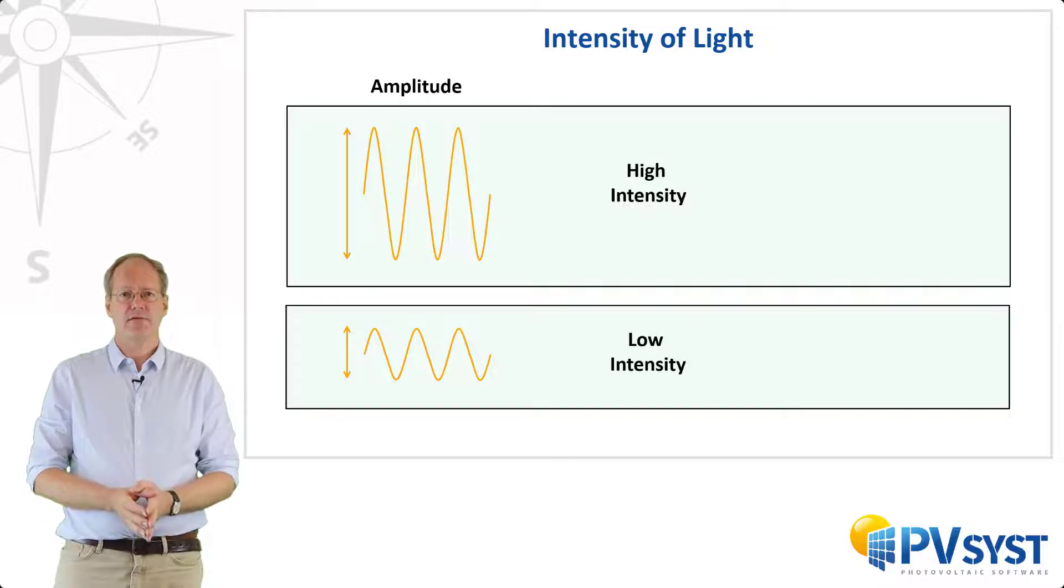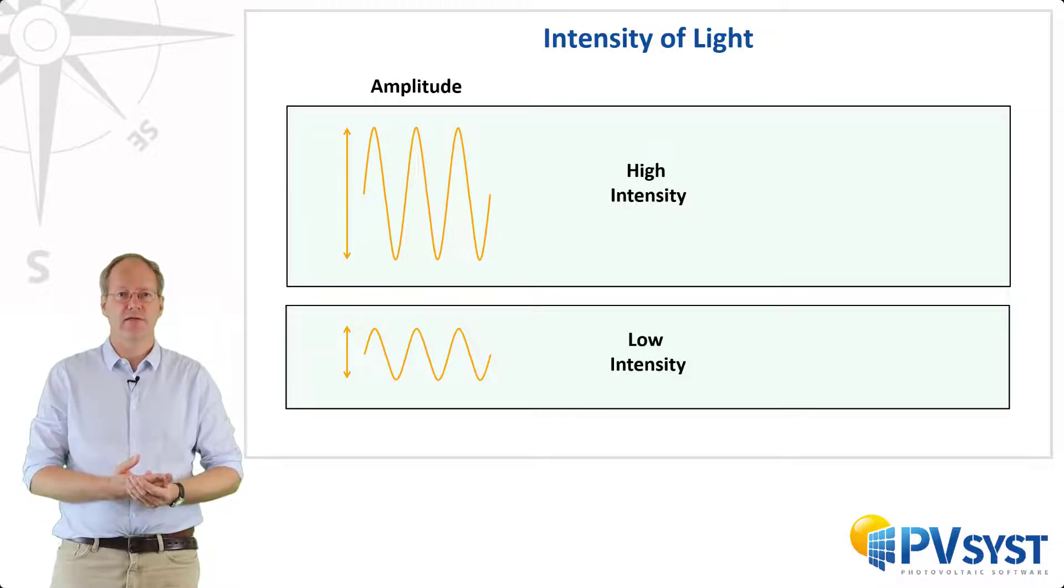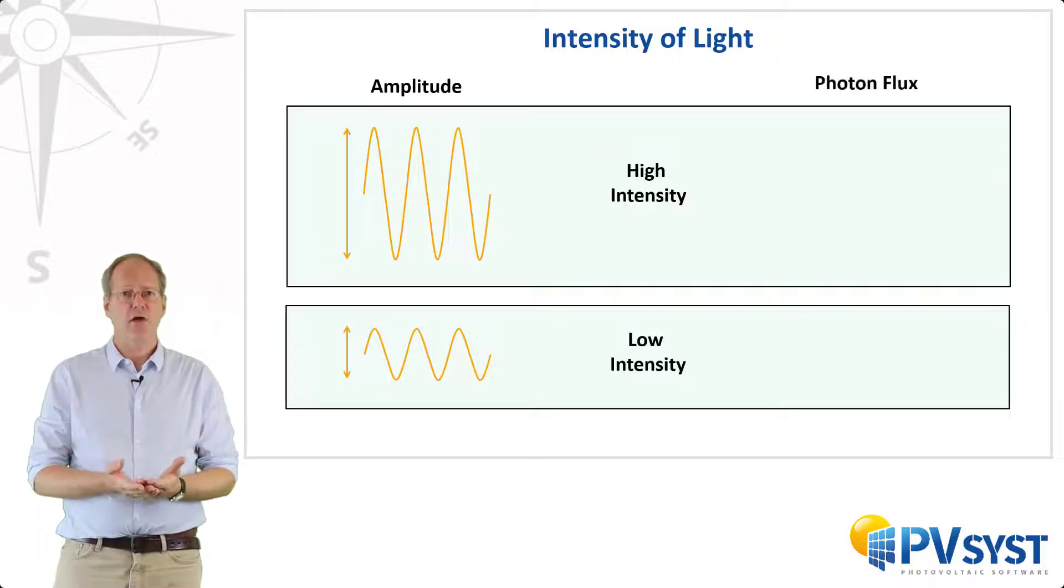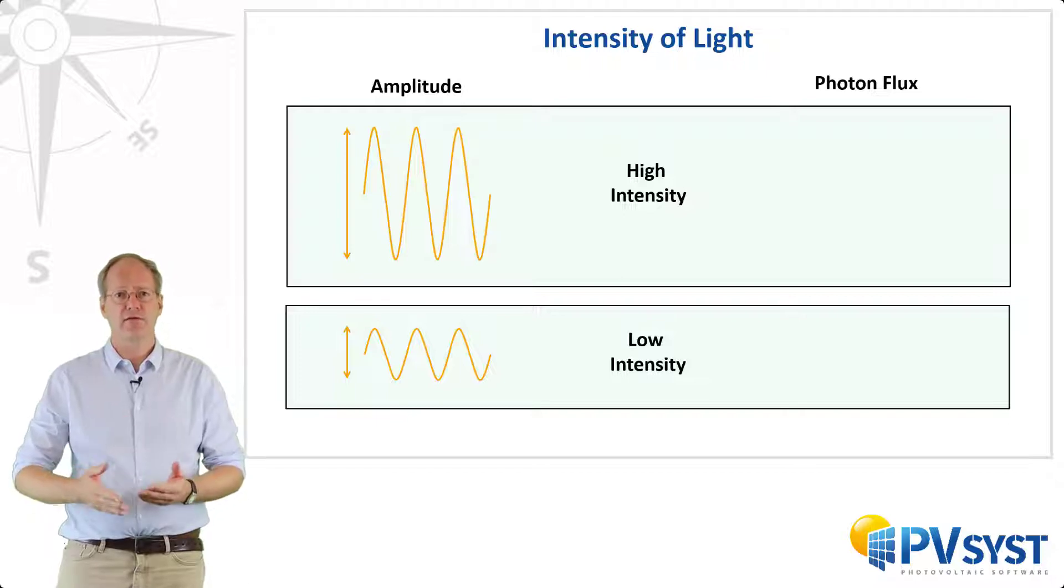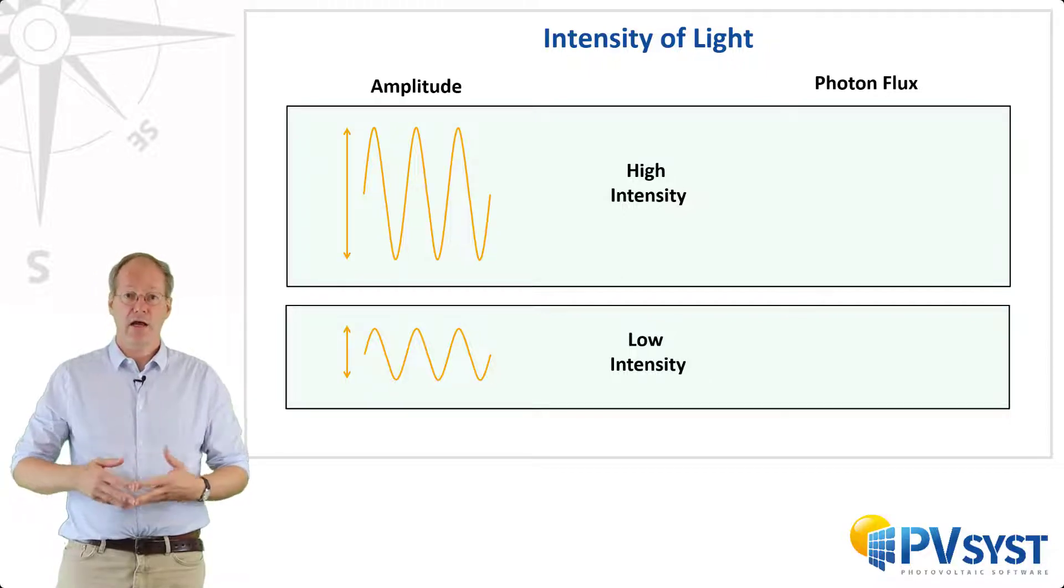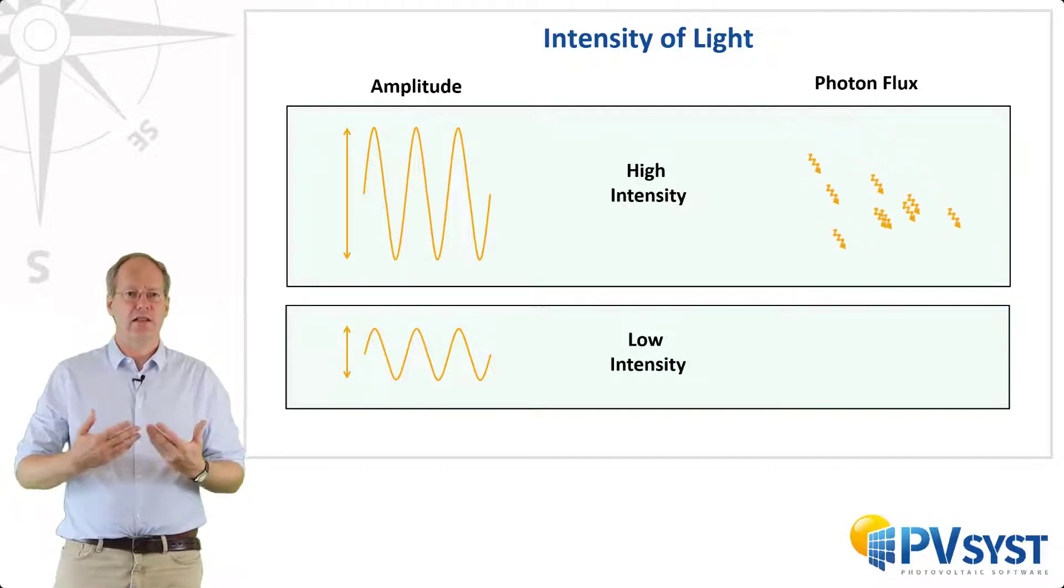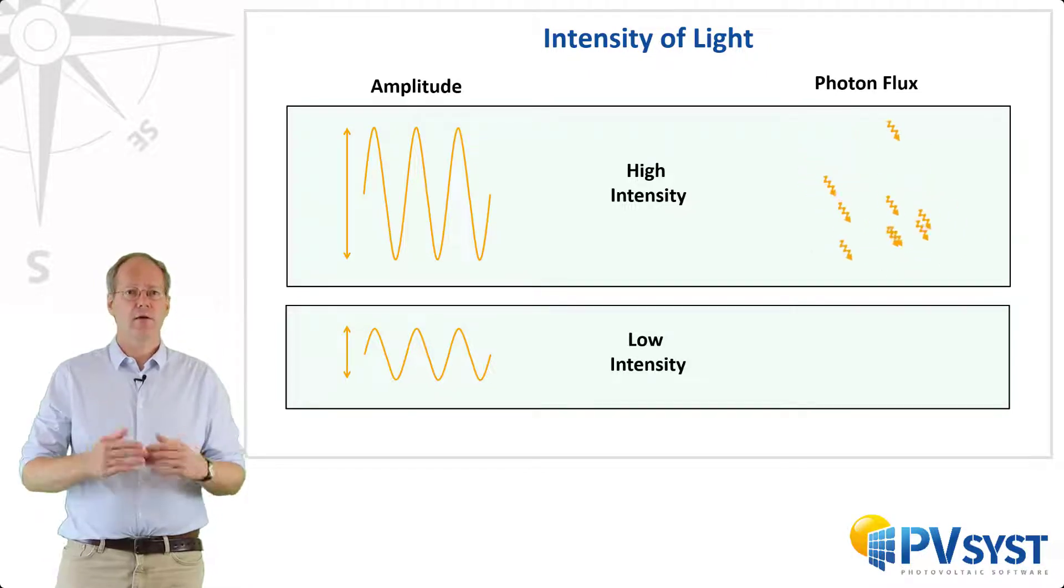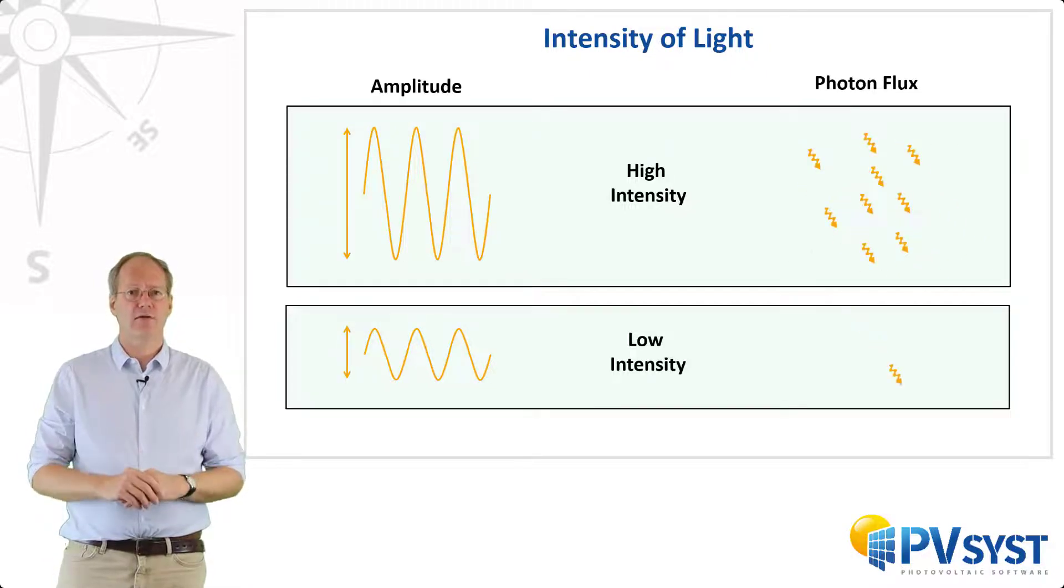So what about particles? Particles do not have amplitudes, so we cannot use that to model intensity of light. In terms of particles, we use photon flux, or the amount of photons per unit area flowing through. High intensity light would have a large flux of photons, while low intensity light would have a small flux of photons.